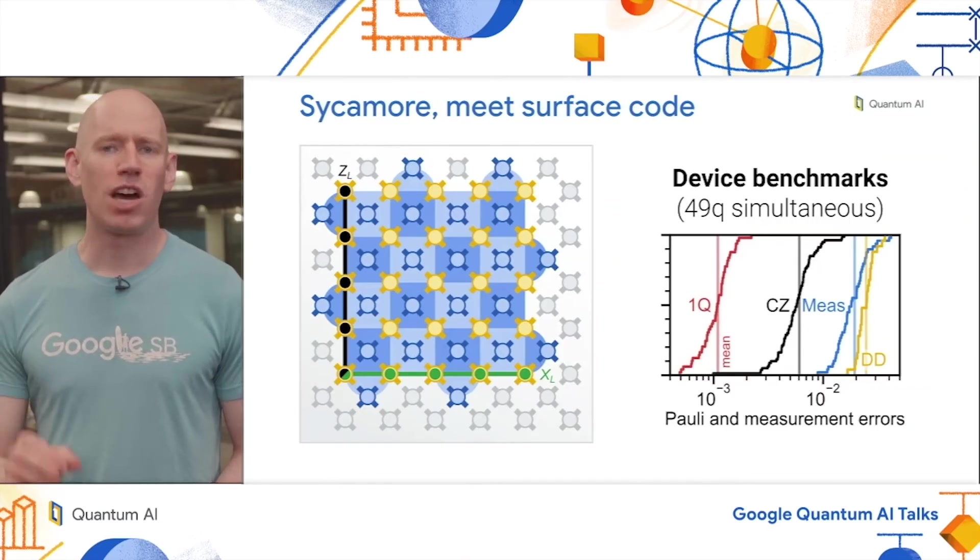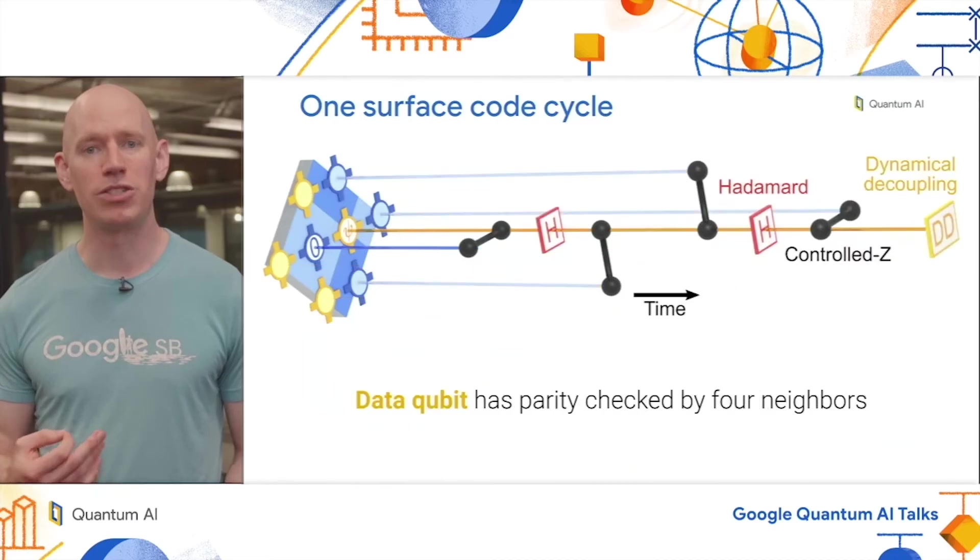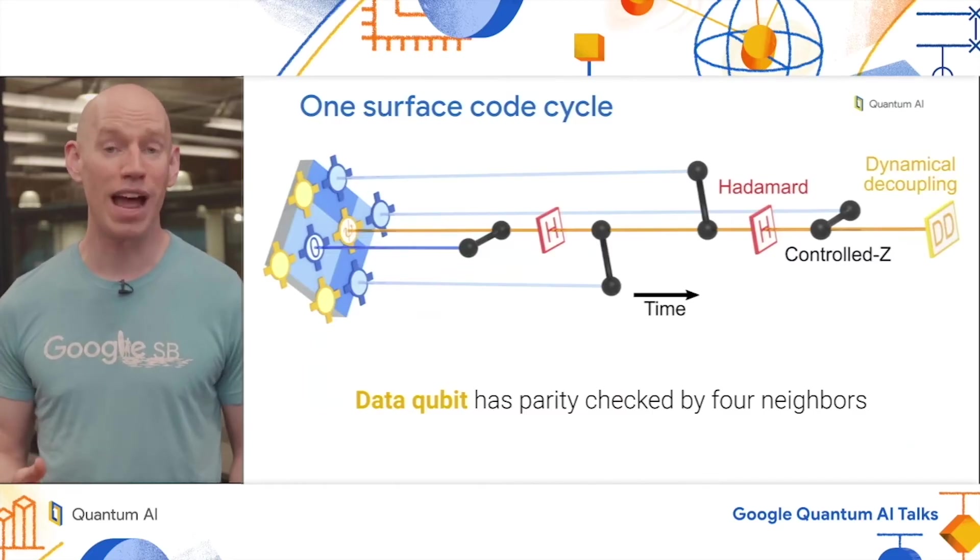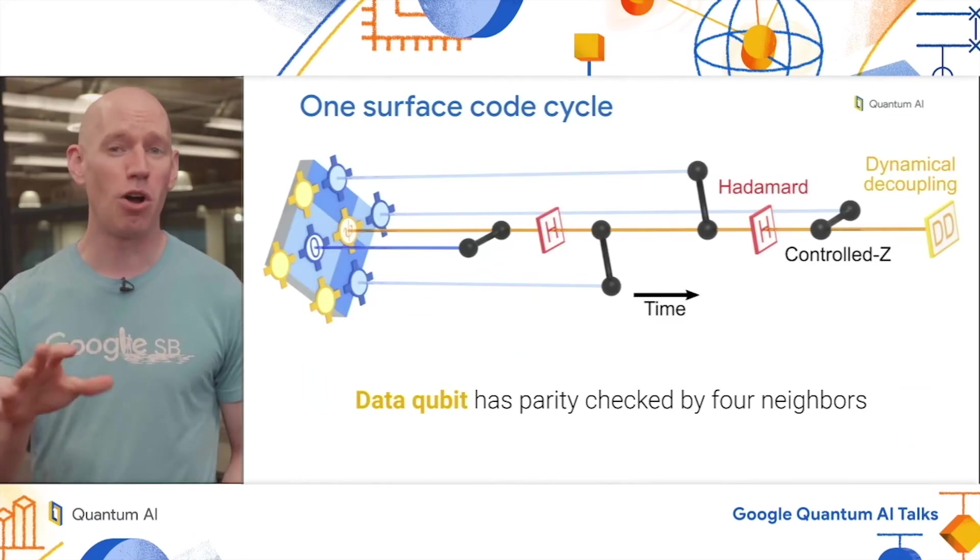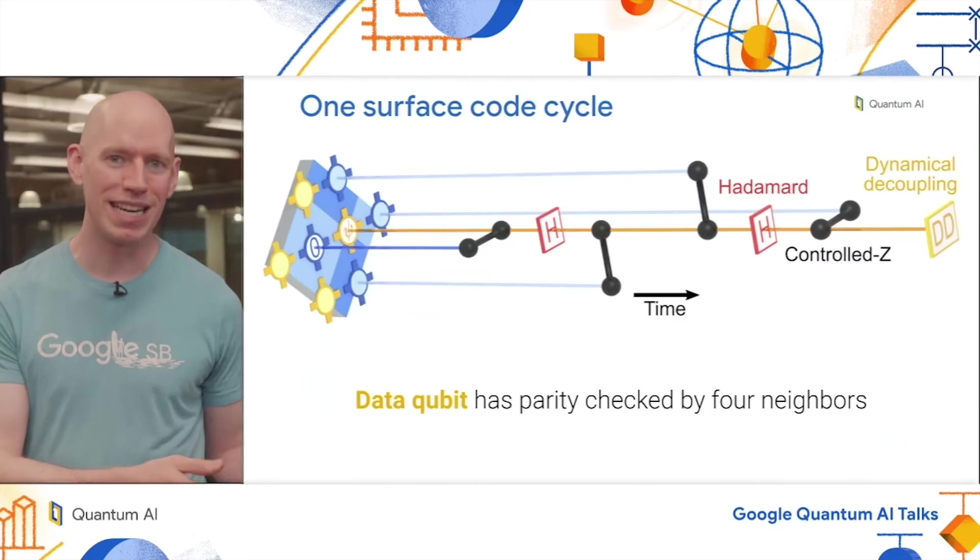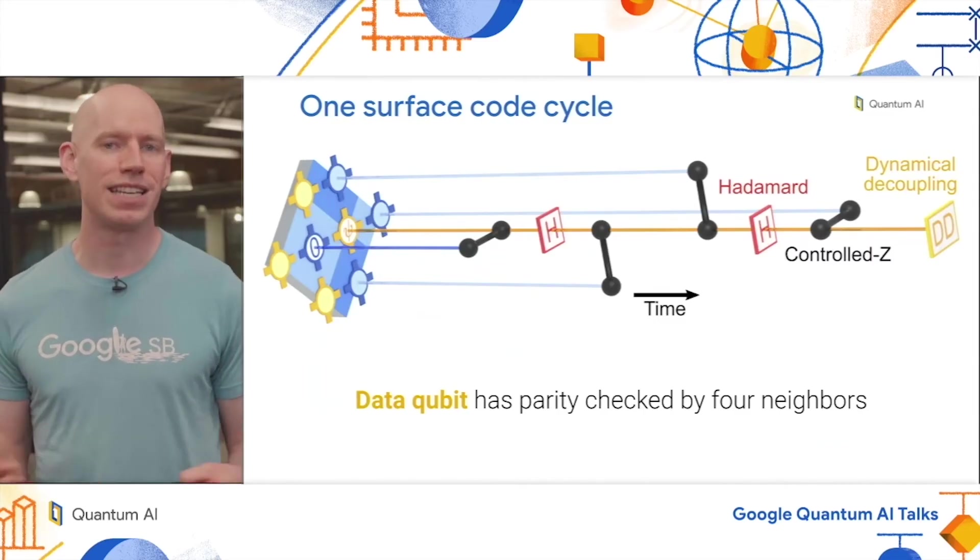Let's look at the surface code cycle, focusing on one measure qubit. This is the qubit in blue that starts in the zero state. Then we do a Hadamard and four control Z gates with its four neighboring data qubits, followed by a Hadamard measurement and reset. This operation effectively maps the operator ZZZZ on the four neighboring data qubits onto this measure qubit so that it can be measured. From the perspective of the data qubits, they similarly have four control Z gates to interact with their four neighboring measure qubits. These Hadamard gates between the control Z gates control what basis the measure qubits are measuring. We use this same exact circuit for all data qubits so that all the stabilizers are measuring ZXXZ. This largely symmetrizes the error between the X and Z logical bases.